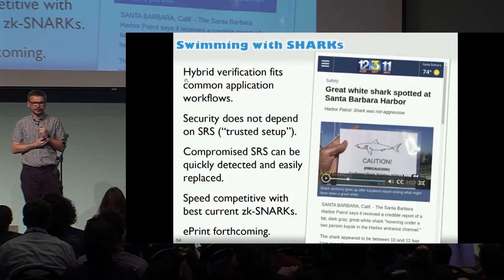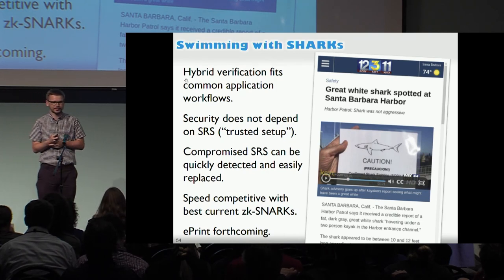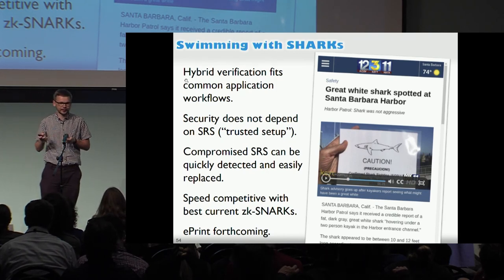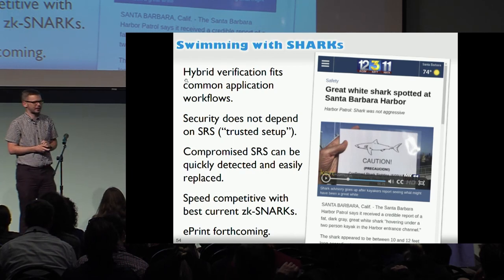In a sense, we get a proof system that combines the best properties of both non-succinct proofs and SNARKs. A compromised SRS doesn't yield a break in the system. The ePrint is forthcoming, but there is already some coverage about ZK-SHARKs.